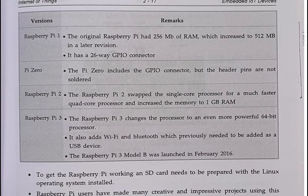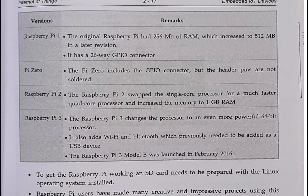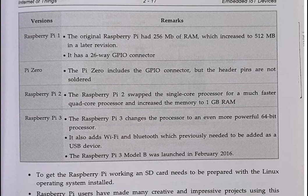The Raspberry Pi 3 changed the processor to an even more powerful 64-bit processor, similar to modern computers. It also added Wi-Fi and Bluetooth, which previously had to be added as a USB device. The Raspberry Pi 3 Model B was launched on February 26th, and it represents the latest version available.